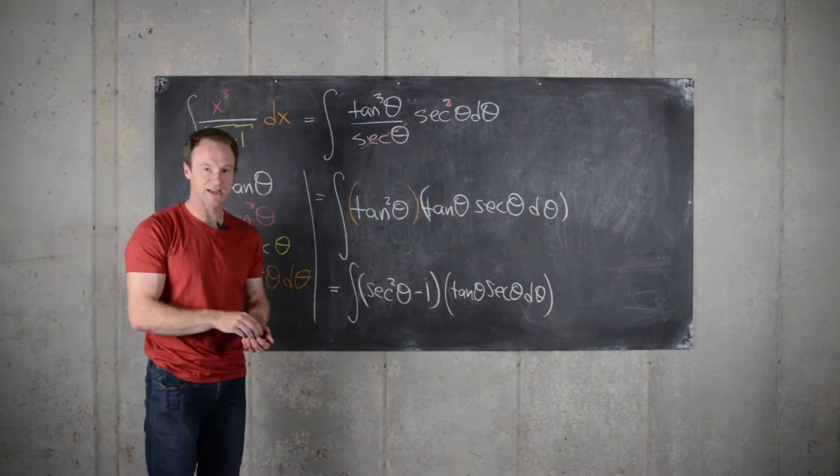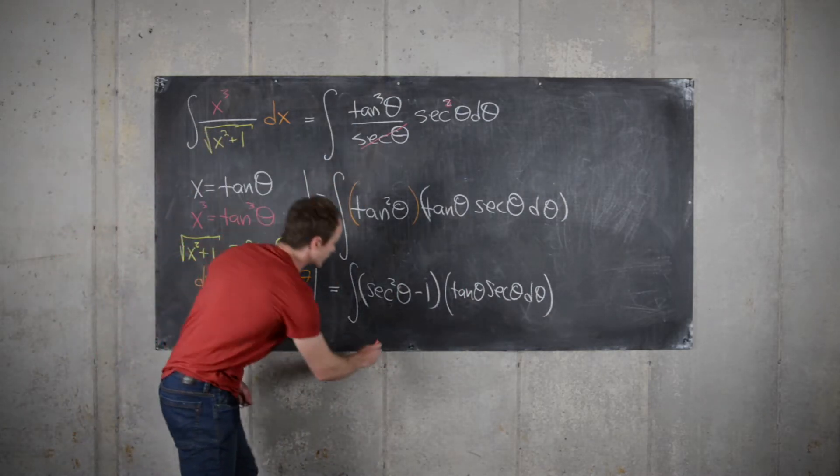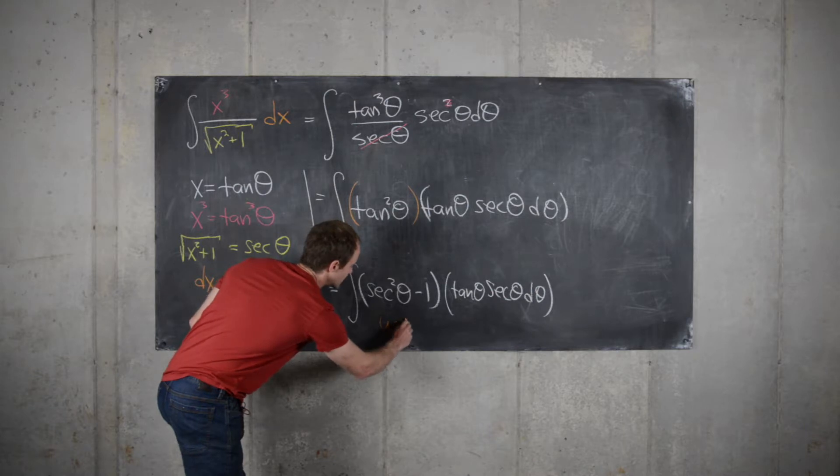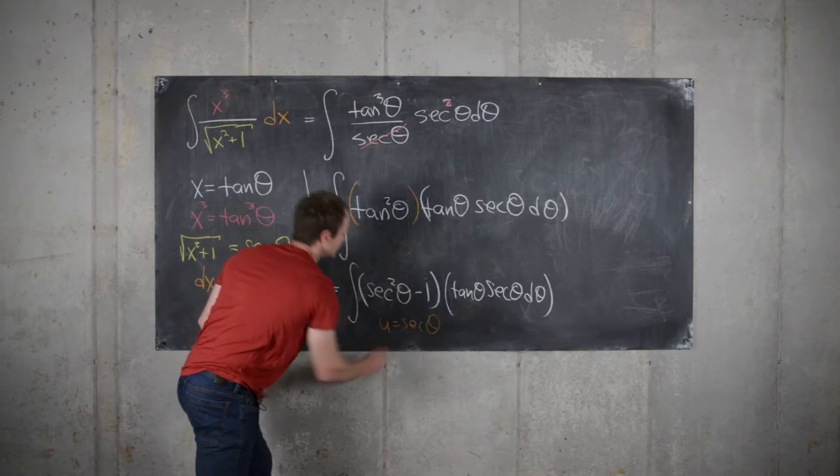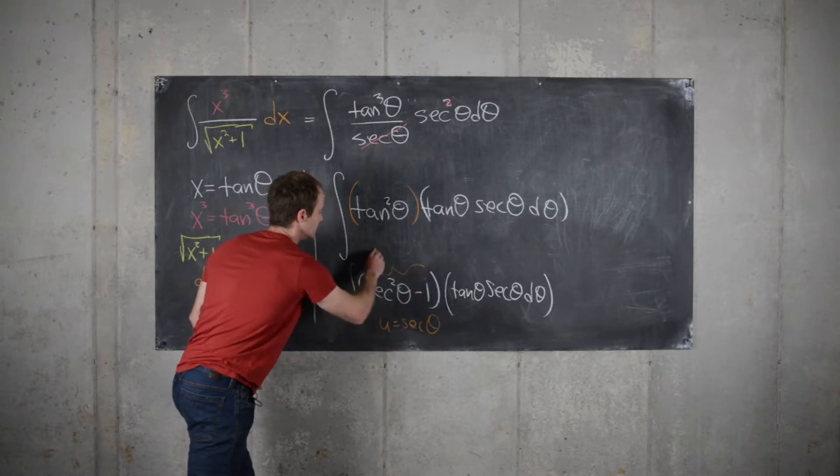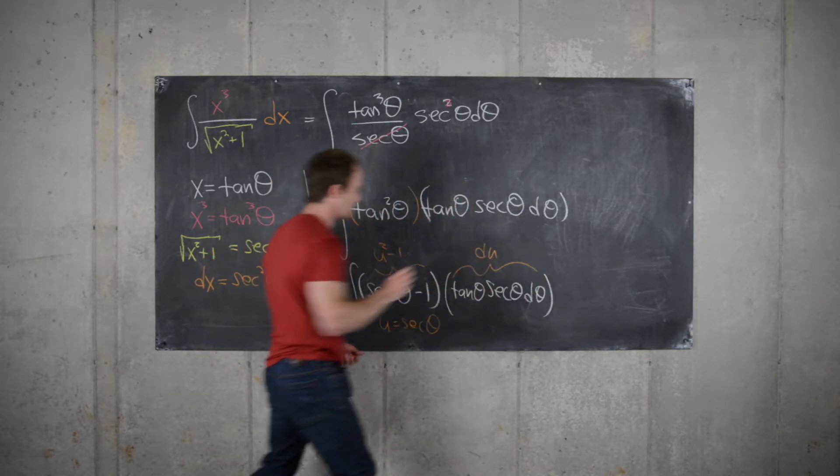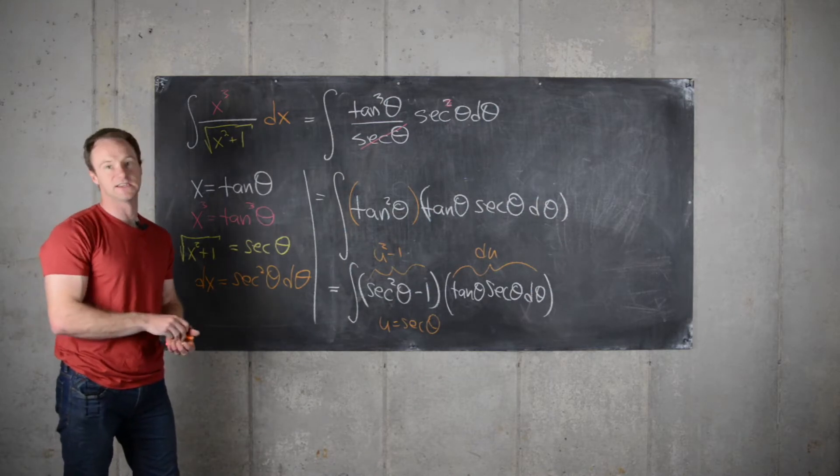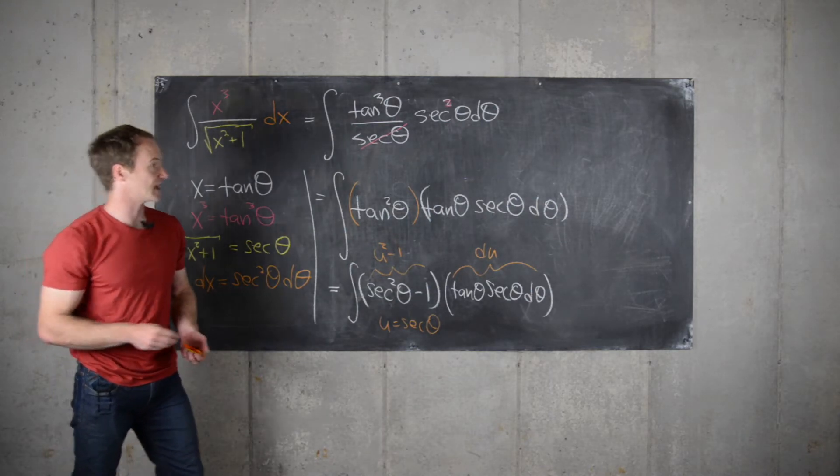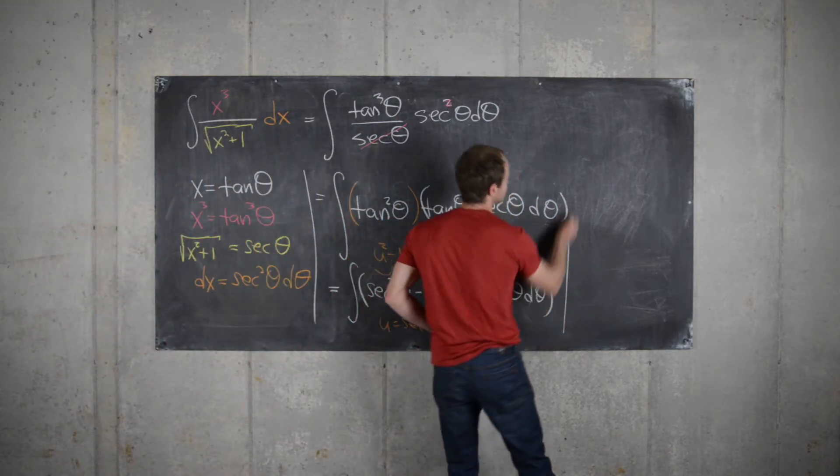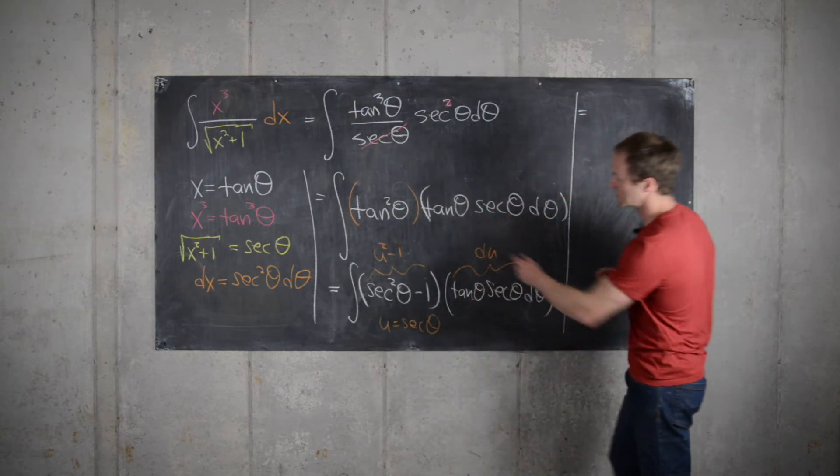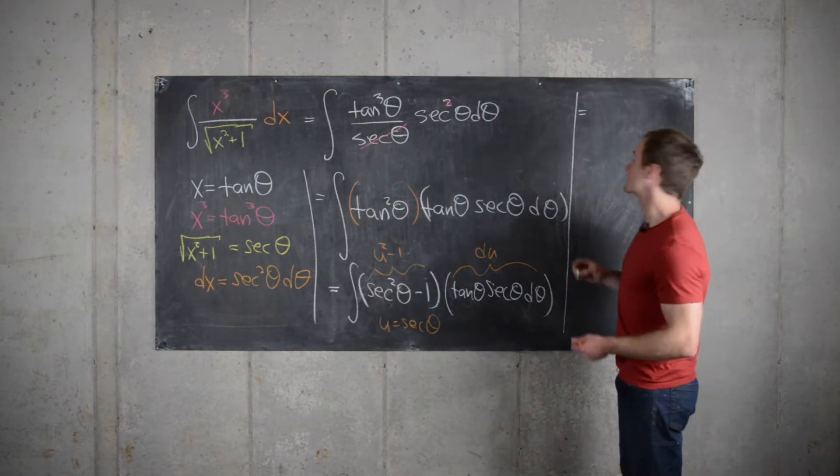So this might seem like it's too much work, but now notice if we let u equal secant theta, this turns into u squared minus 1, and all of this is just du because the derivative of secant is secant times tangent. And so that's great, because that gives us the integral of just a polynomial, which is a lot easier.